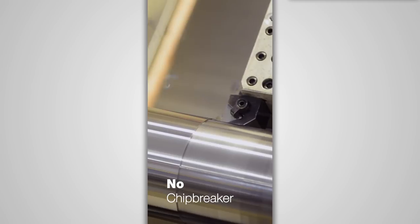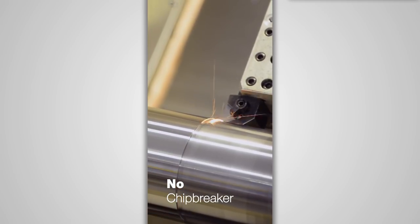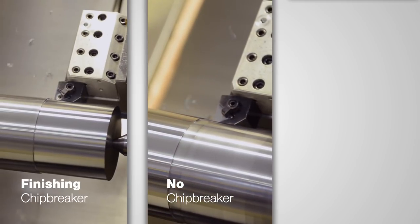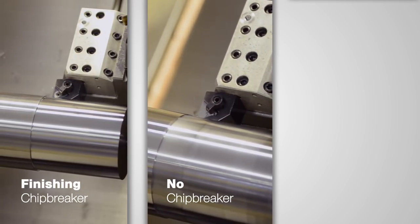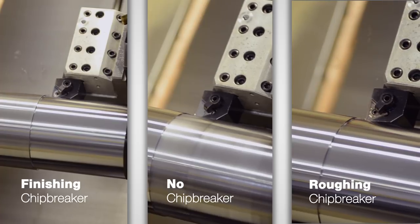So here is a tool with no chip breaker whatsoever. Here is that finishing chip breaker we just found, but used in a roughing cut. And here is roughing with a roughing chip breaker.